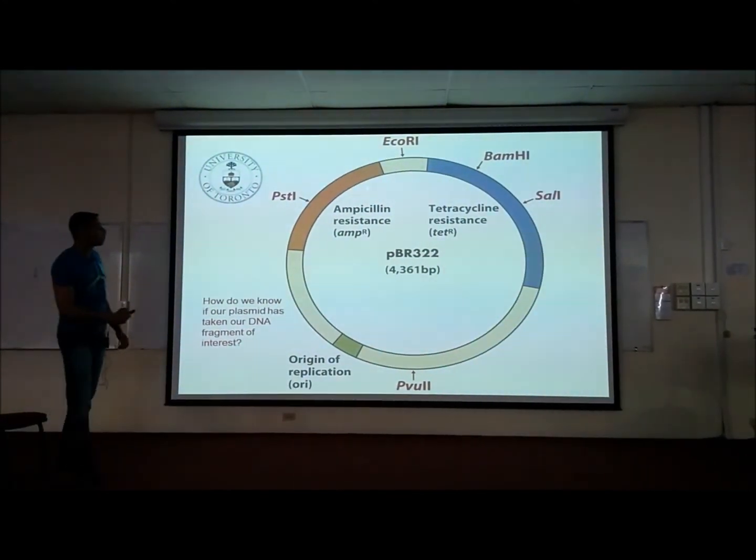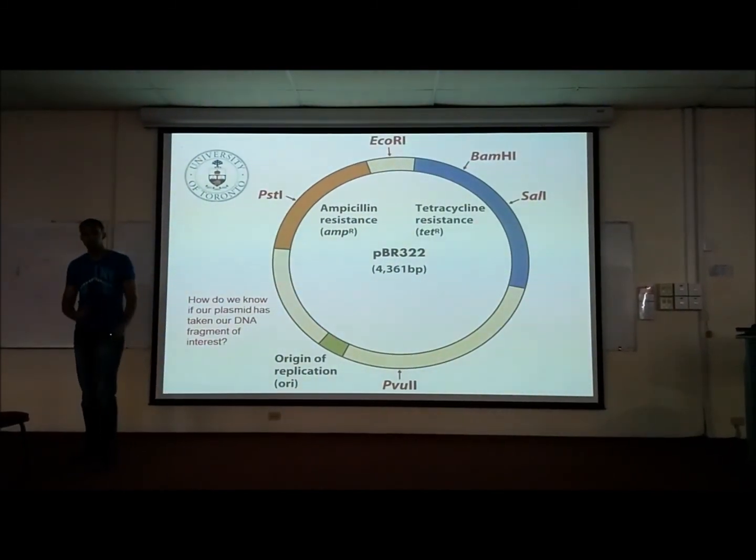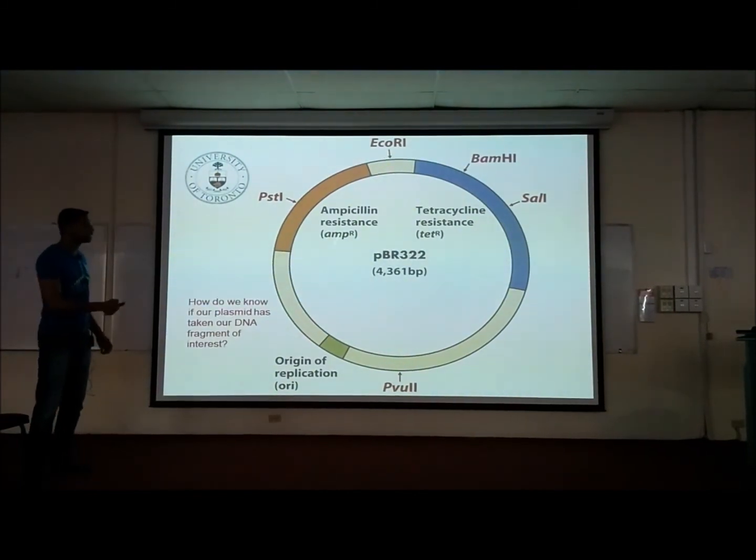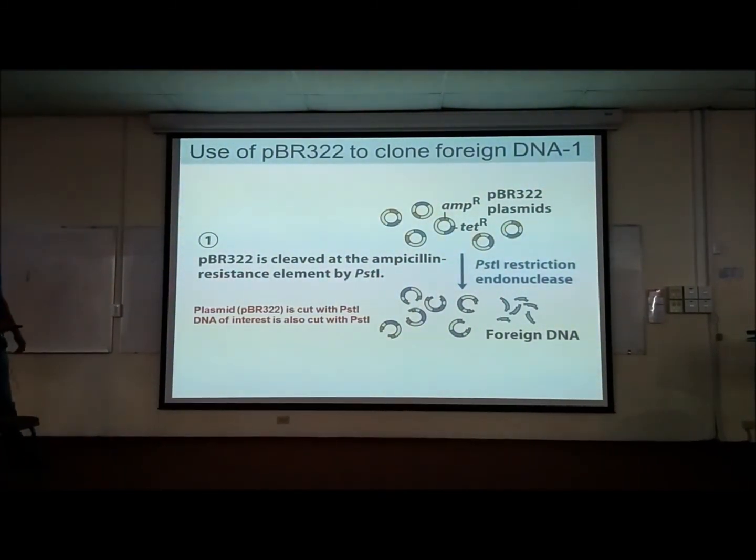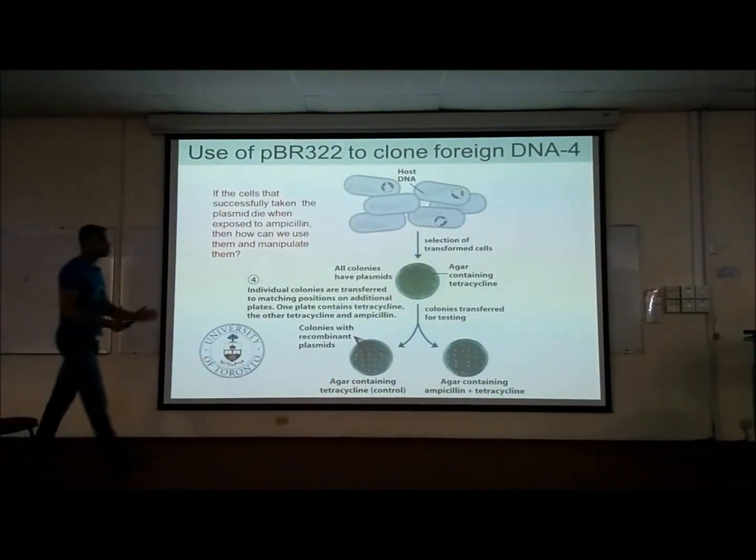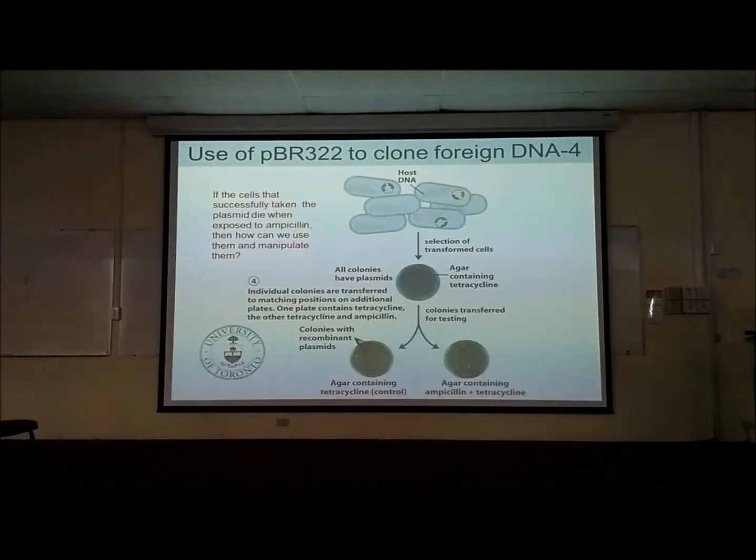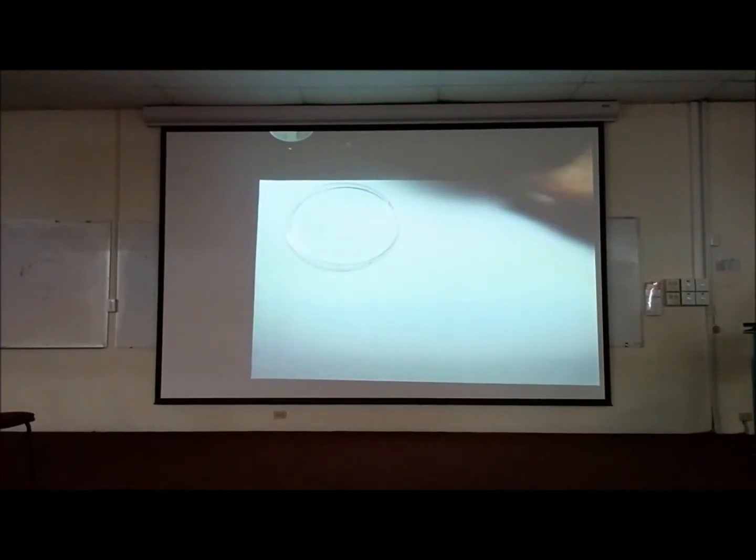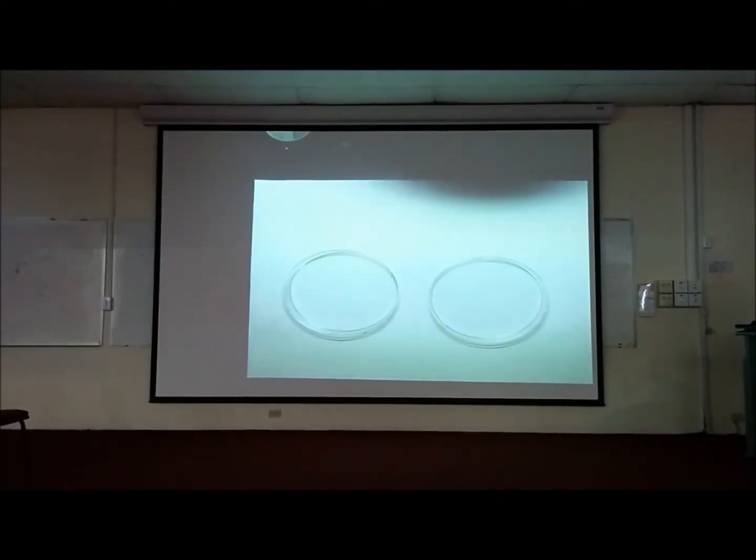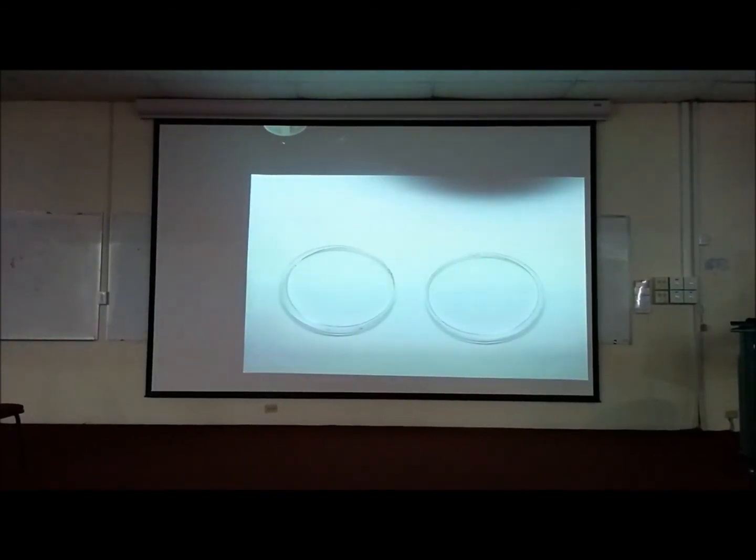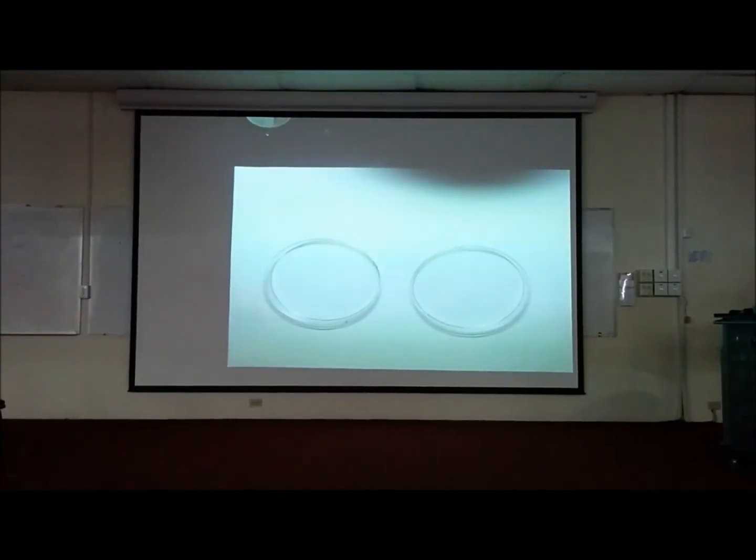We choose an endonuclease that's going to cleave this ampicillin resistance. If our target DNA or our DNA of interest successfully inserts in this region, will they have ampicillin resistance? No. The bacteria this plasmid gets inserted in will not have ampicillin resistance if it successfully takes our DNA. Do the plasmids still express tetracycline resistance? Yes. The tetracycline gene is not interrupted. When we inject the plasmid into a bacteria, they're still going to have resistance to tetracycline. But the ones who successfully take up the plasmid will not have ampicillin resistance.